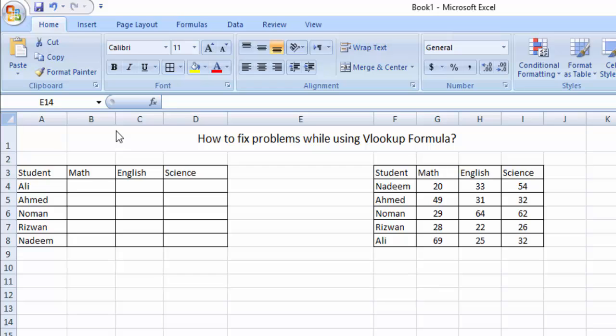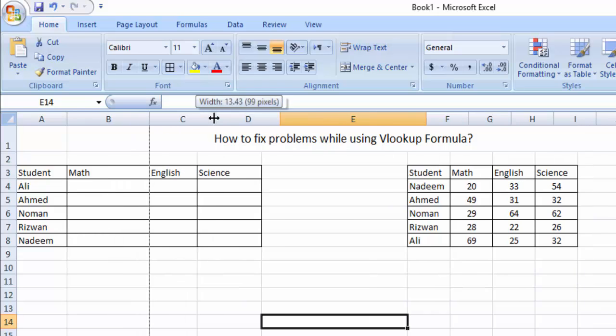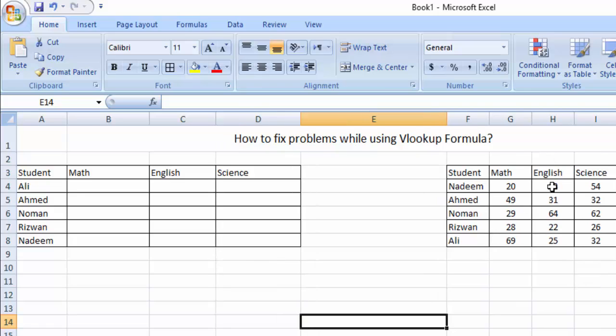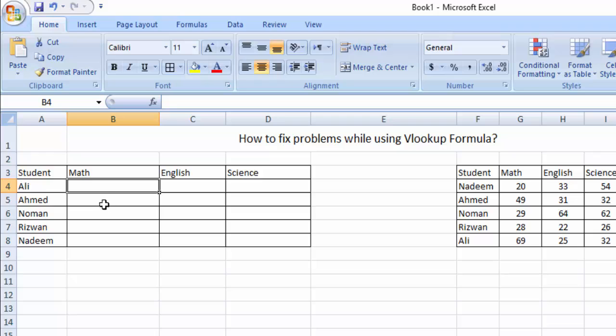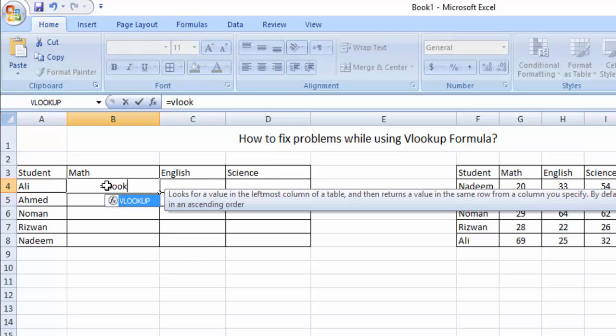And we are going to apply the formula here, VLOOKUP, to assign these marks. As Ali is the same here, Ahmed, Noman, Rizwan, Nadeem. So we want to know about the marks of Ali. We will apply formula equal to VLOOKUP.